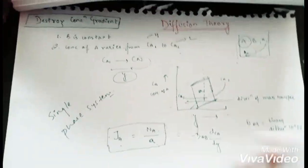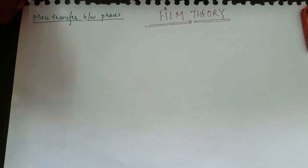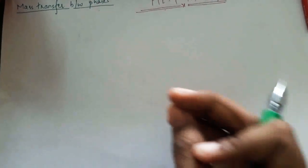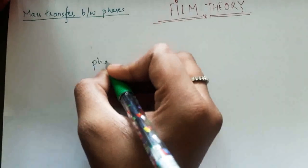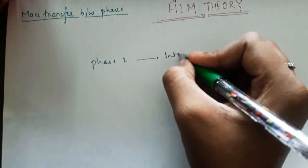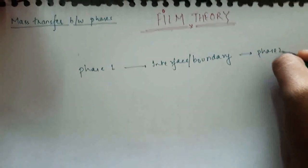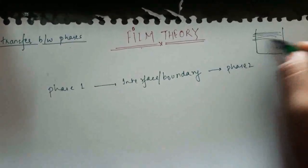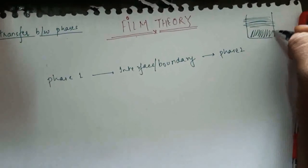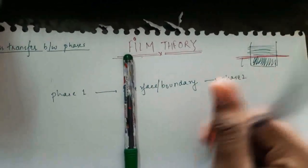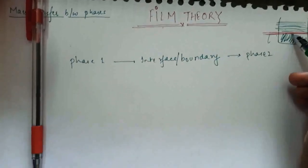Now moving on to the second theory under molecular diffusion: film theory. The key concept here is that it involves mass transfer between phases. Film theory considers the transfer of a molecular component from one phase to another, involving transport from the bulk of one phase to the phase boundary or interface, and then into the second phase.